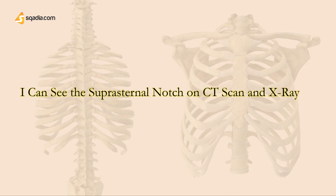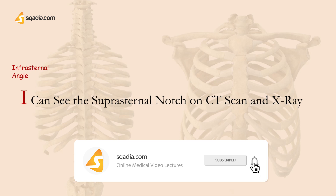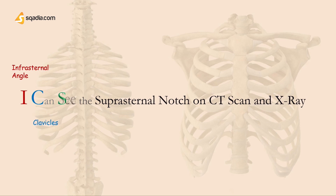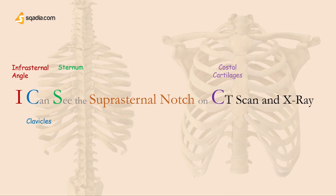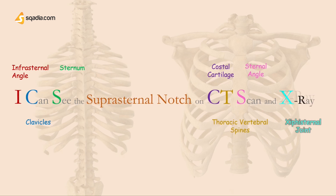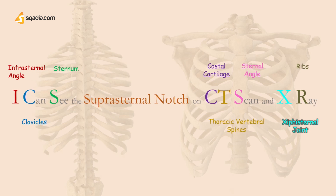We've made mnemonics to help you remember what to look for when spotting surface landmarks on a real patient. For the bony surface landmarks, the mnemonic is: 'I can see the suprasternal notch on CT scan and x-ray' — where I is for infrasternal angle, C for clavicles, S for sternum, the suprasternal notch, C for costal cartilages, T for thoracic vertebral spines, S for sternal angle, and the xiphisternal joint and ribs. These are the bony surface landmarks you need to look for on a patient.